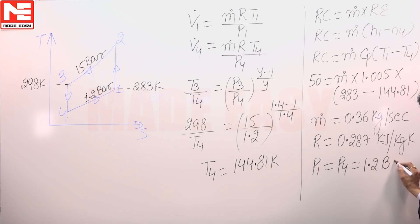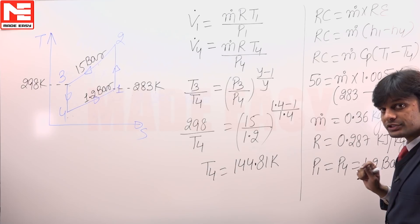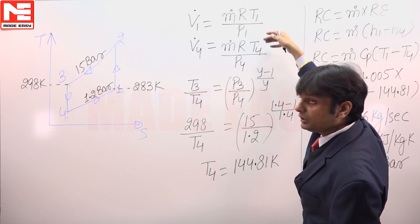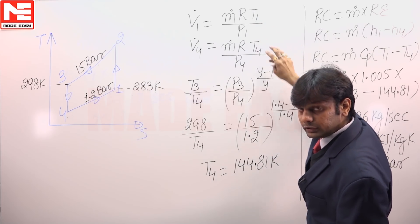Use all these factors: the values of M dot mass flow rate, the characteristic gas constant, P1 and P4, and T1 and T4 in this equation to get the values of volume flow rate.